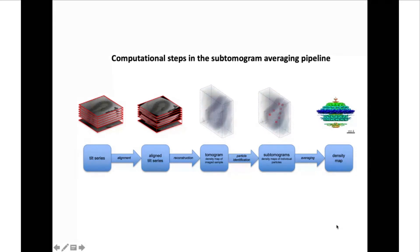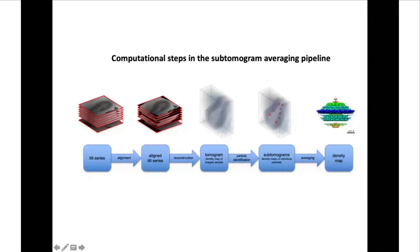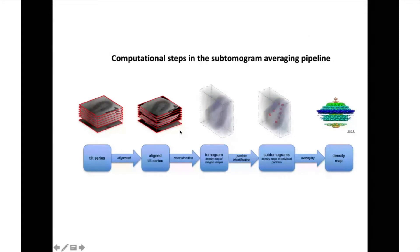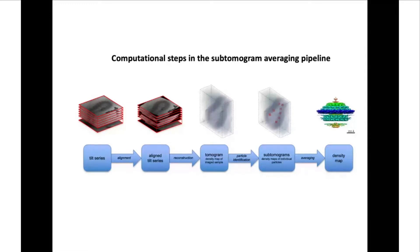In principle you start with a tilt series, which is the raw data from the microscope. Then we align these tilt series so that the different micrographs, the different projections, come in register with each other. With this aligned tilt series you can create your tomogram, which is a three-dimensional model of what you have imaged in the microscope. In this three-dimensional model you need the positions of the repeating units that you want to align and average, and then you get your density map.